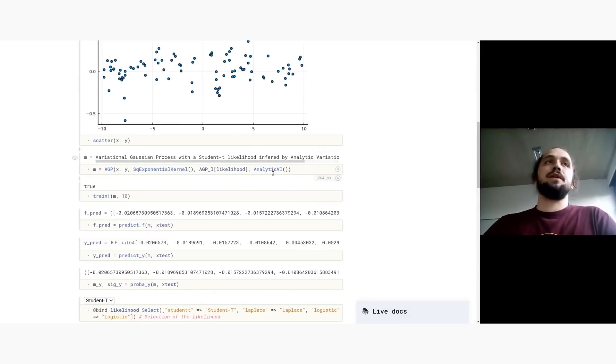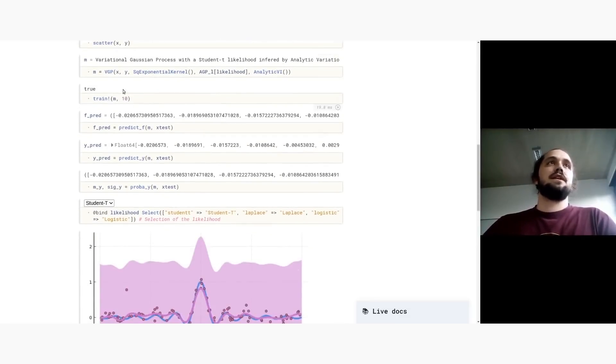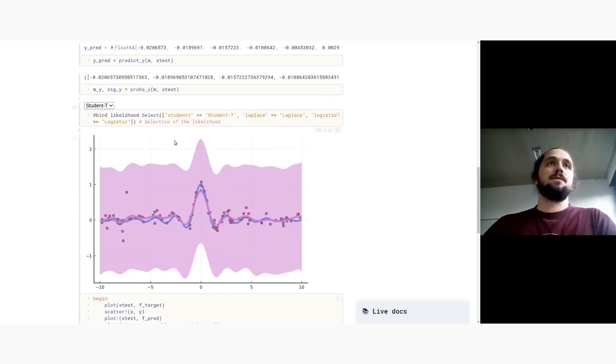And here I just give my data to my model, give a kernel from kernel functions, likelihood, and a way to solve the problem. And I just need to train it. And then I can make all the predictions I want from some test data.